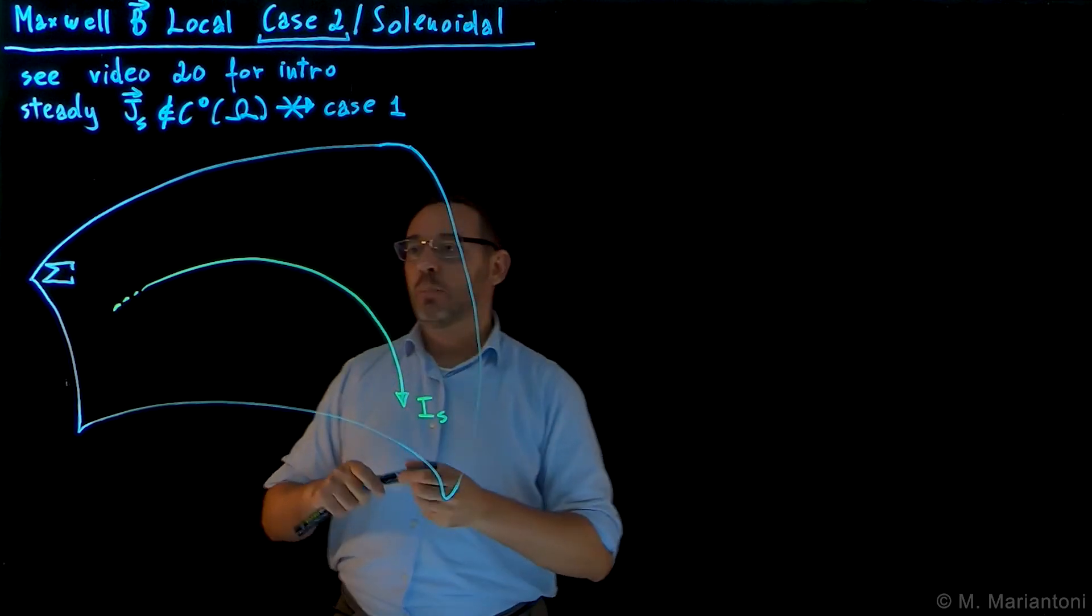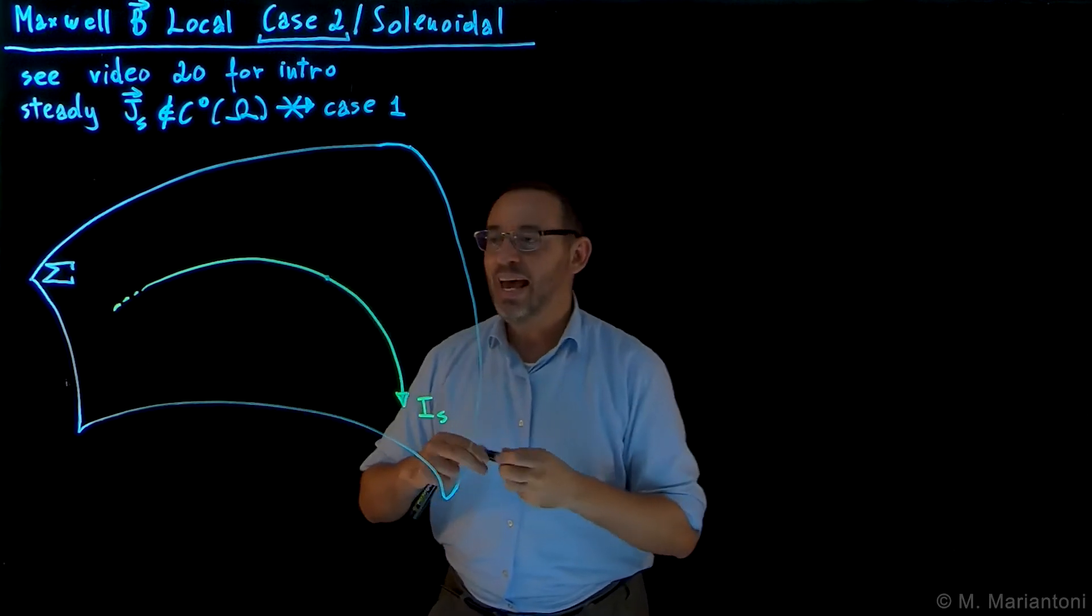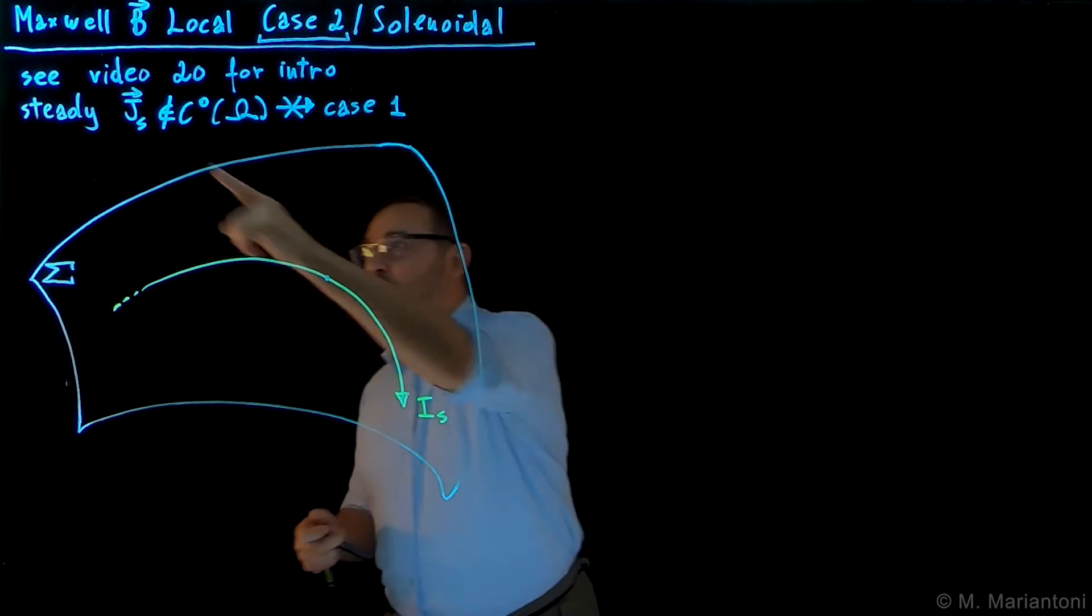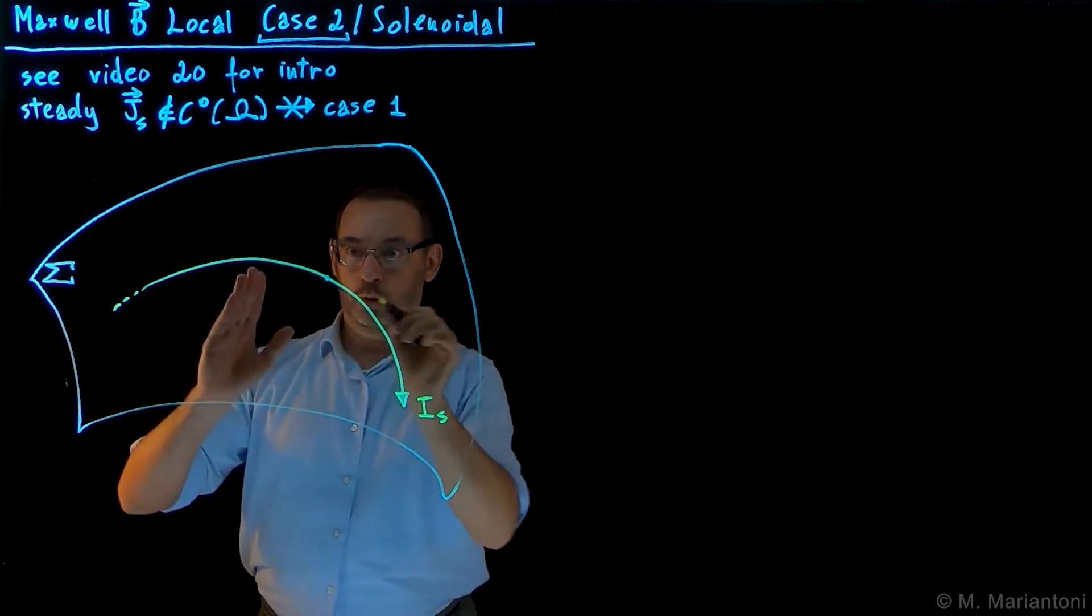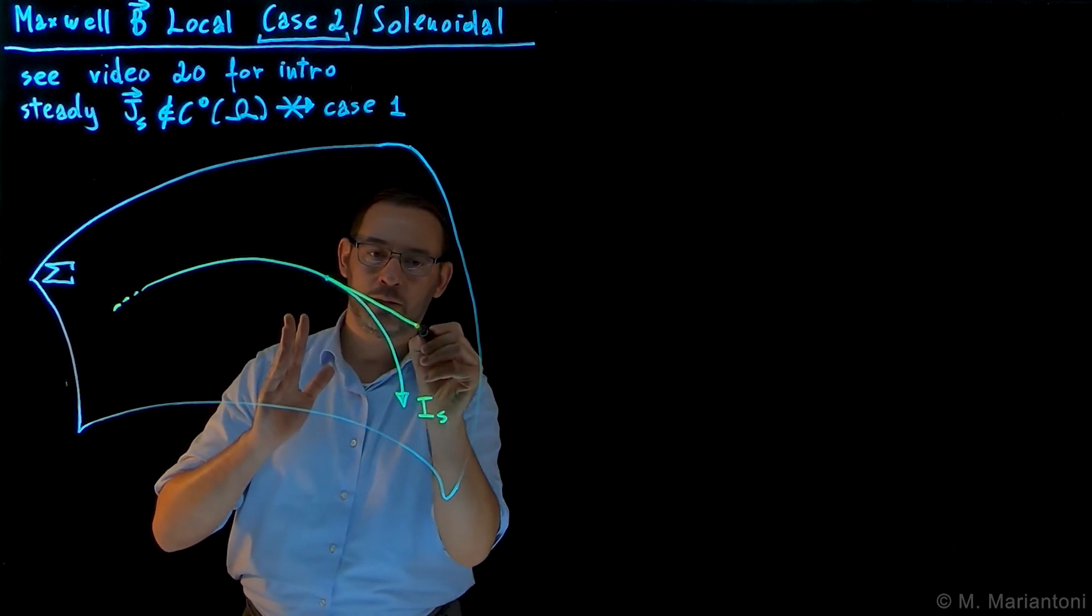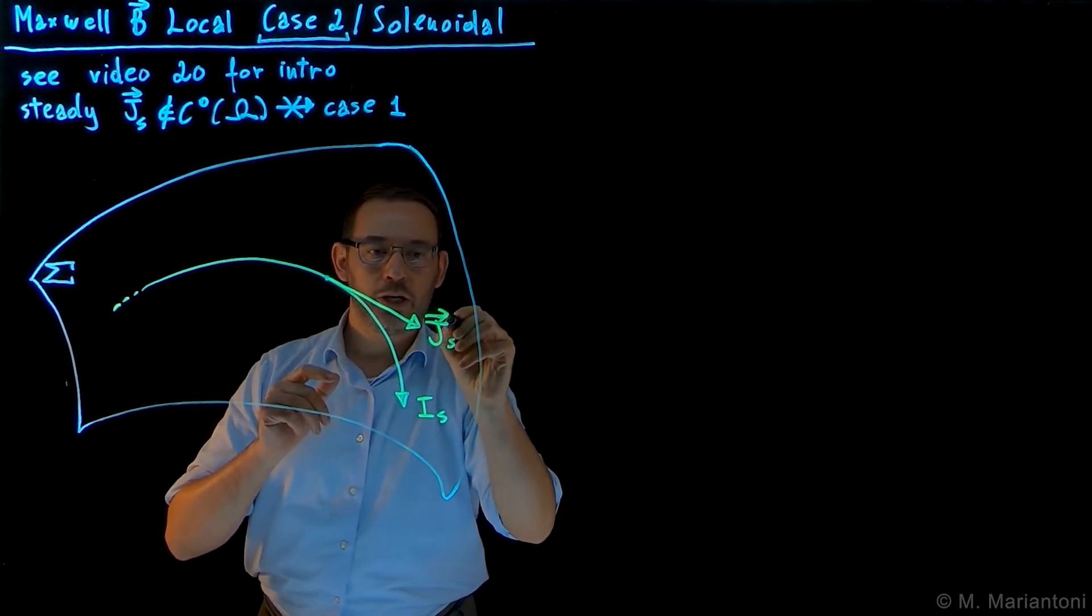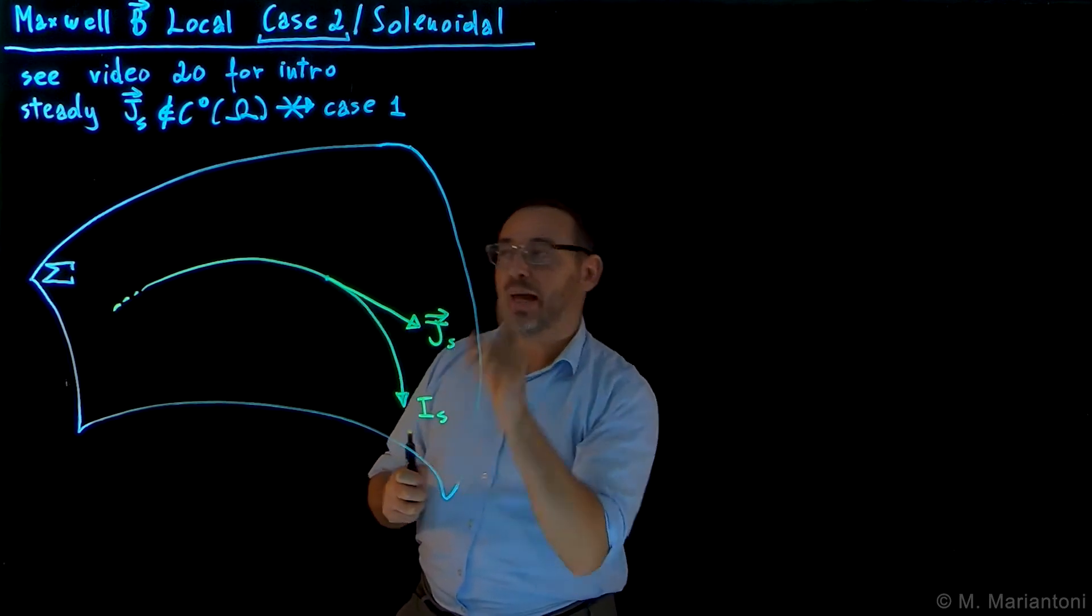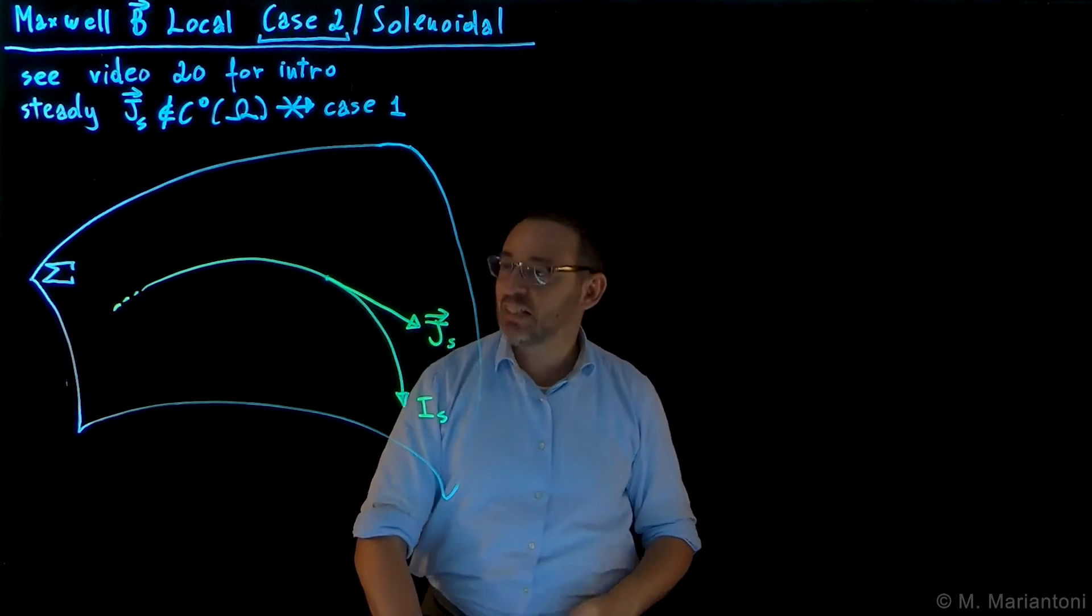So now, let's consider a point capital P, for example, this point here, along this I_S. The tangent at that point is where J_S lives. So J_S is on the tangent here, to this curve, so it's this vector here. This is J_S, the current density vector on the surface, which again is tangent to I_S, and it only resides on the surface. And this is our point capital P, I will specify it later. We're going to need it also for the next video.